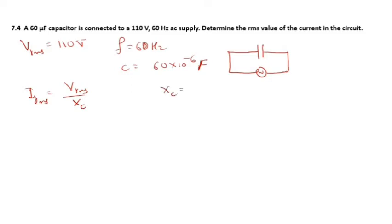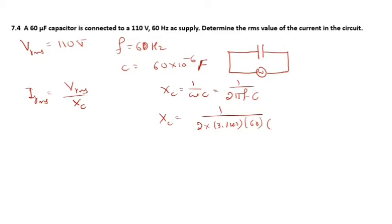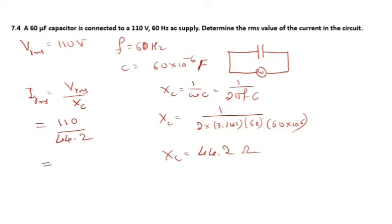The opposition is capacitive reactance X_C = 1 / (2πFC) = 1 / (2 × 3.142 × 60 × 60 × 10⁻⁶) = 44.2 ohm. Therefore I_RMS = V_RMS / X_C = 110 / 44.2 = 2.49 ampere.